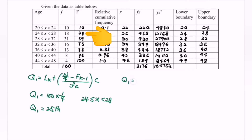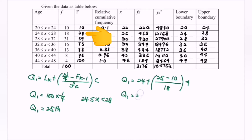So for Q1, it equals 24 plus bracket (25 minus the previous cumulative frequency, which is 10) divided by the frequency for the current class, which is 18, multiplied with the class size which is 4. So from here, Q1 is equal to 27.333. Rounding up, so 27.3. So here we have the first quartile.